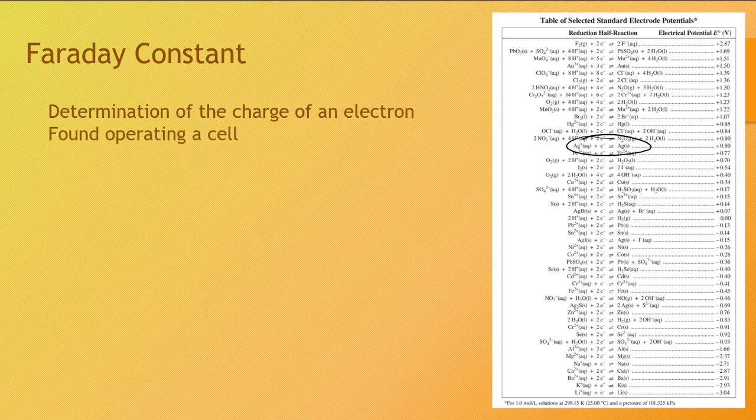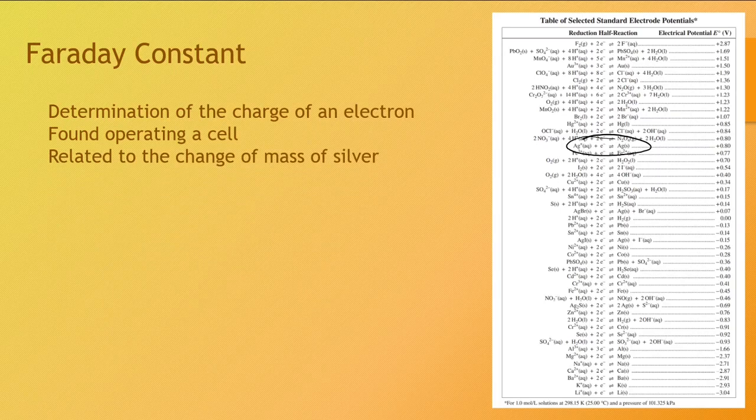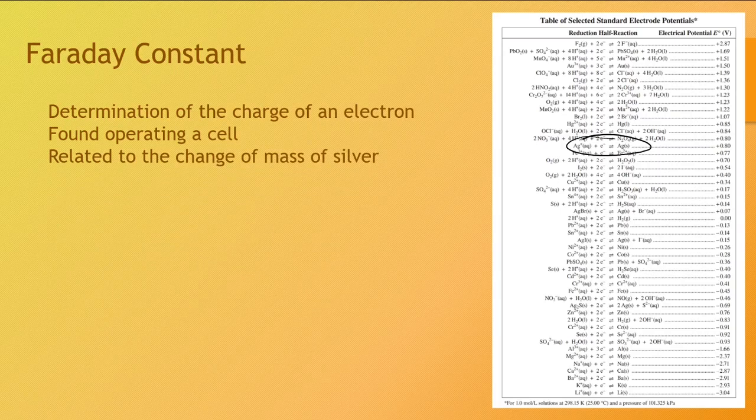So what he did is he operated a silver electroplating cell for a certain amount of time and knowing what he did about physics, he was able to relate the time that the cell operated and the current instrument used to the mass of silver that was plated and created a ratio.